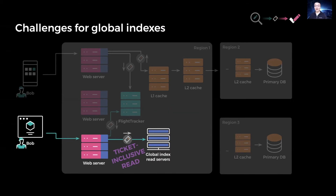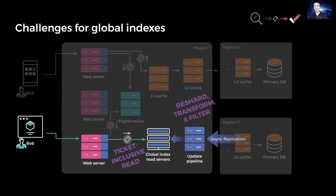While caches can easily determine whether their cached items are fresh enough to serve a ticket-inclusive read, it is more challenging for our indexes because they are global but asynchronously updated. The update pipeline for indexes could reshard, transform, or even drop certain writes along the way, as they may not be relevant to certain indexes. That means an index read server may not be able to distinguish between a dropped write versus one that hasn't replicated yet. Please refer to the FlightTracker paper for our solutions.